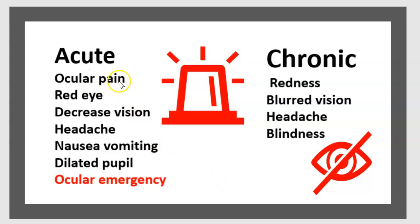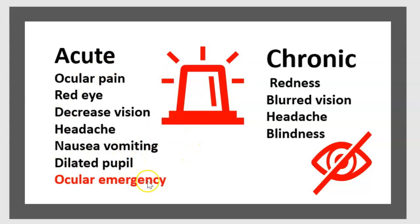Acute glaucoma symptoms include ocular pain, red eye, decreased vision, headache, nausea, vomiting, and dilated pupil. This is an ocular emergency.